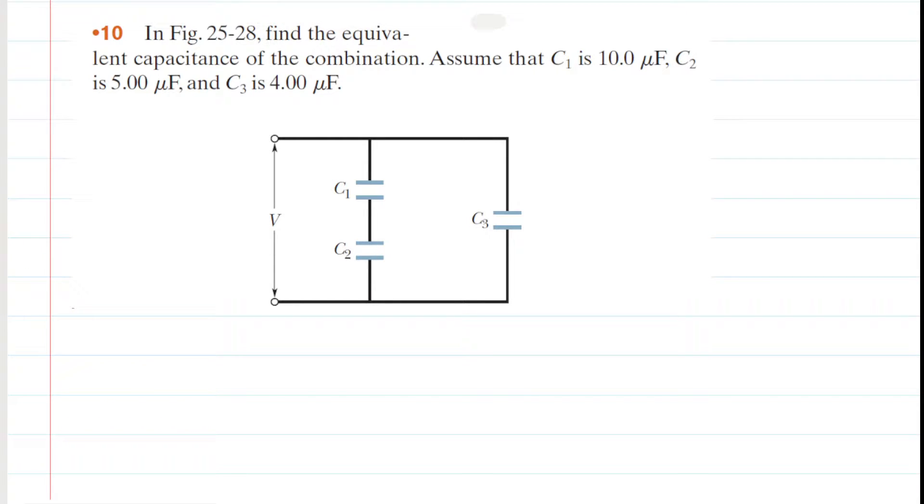In this figure we need to find the equivalent capacitance of the combination. We know C1 is 10 microfarads, C2 is 5 microfarads, and C3 is 4 microfarads.